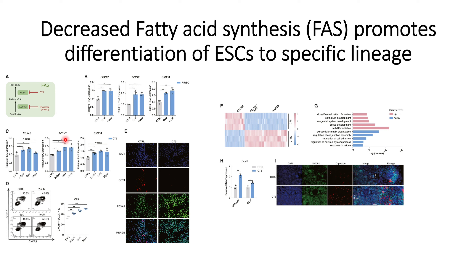When they checked results for the other inhibitor, C75, they observed similar results: FOXA2, SOX17, and CXCR4 are upregulated when cells are treated with C75. Both results indicate that reduced fatty acid synthesis helps differentiation of embryonic stem cells towards definitive endoderm. This was validated using concentration-dependent C75 inhibitor experiments, and they can see an increase in the amount of SOX17 and CXCR4 genes.